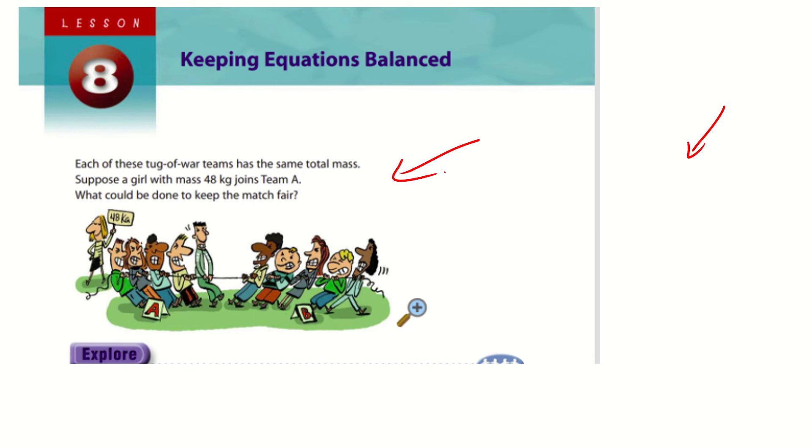So it says here, this is a little practice for you guys. Sorry about the vehicle in the background, my door is open. Each of these tug of war teams has the same total mass, so let's say 400 kilograms each. We're not talking about strength or force here, we're talking about mass, weight.